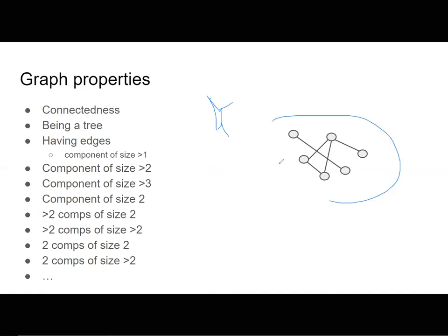How about this graph — is this graph a tree or not? No, it's not a tree; there is a cycle. You can also have a graph which has no edges at all, just isolated nodes.